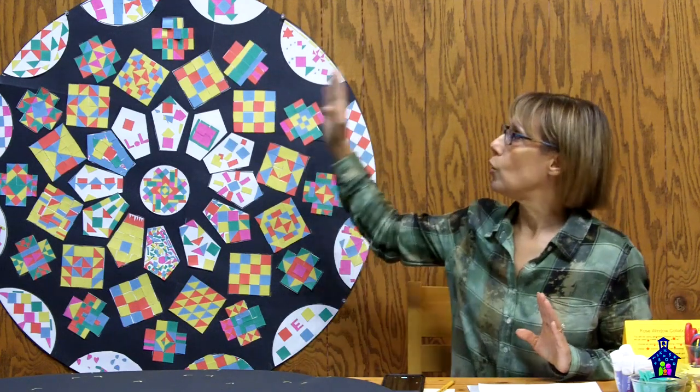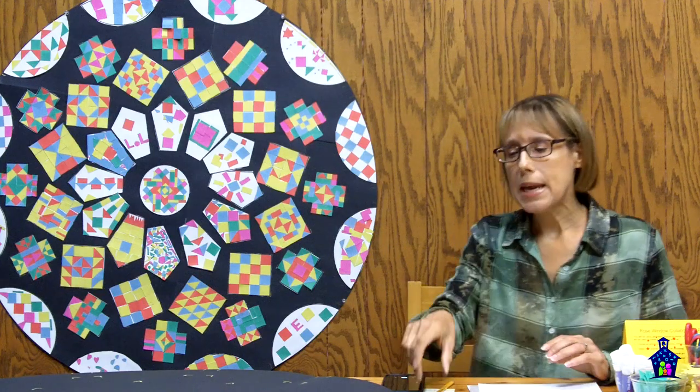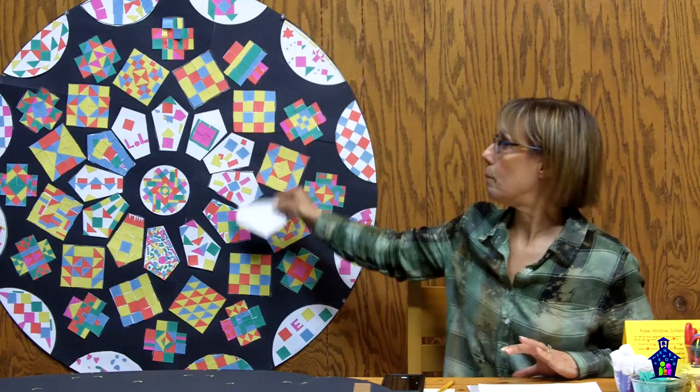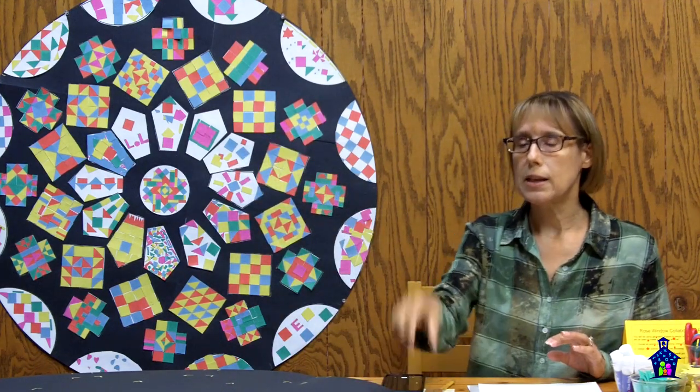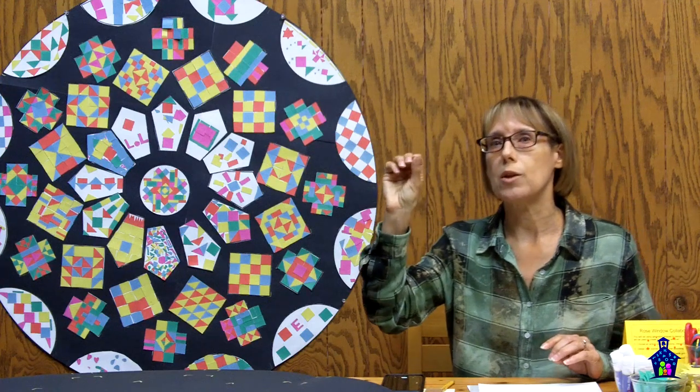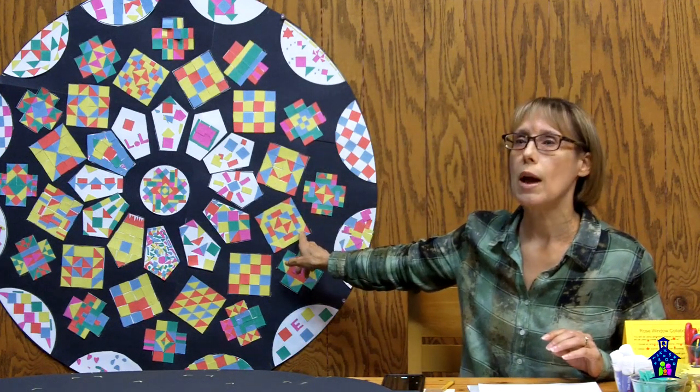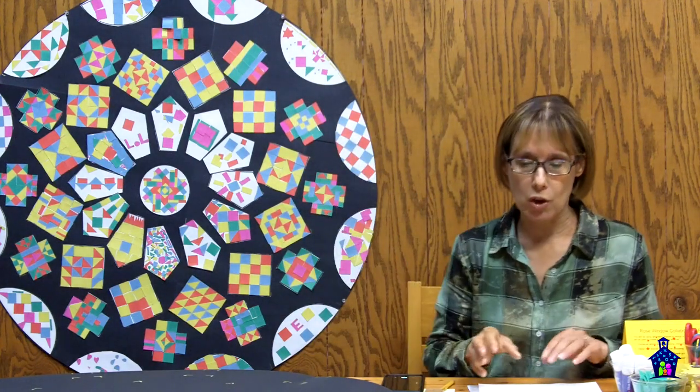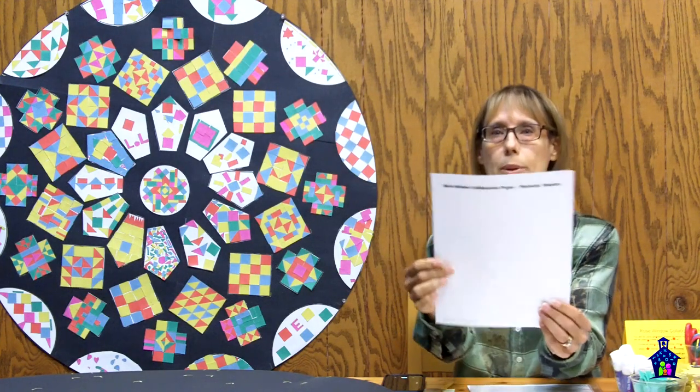So it will be really easy for you to create that. I used poster board to create mine, but you can also use bulletin board paper as well. So once you've got your black circle created, to make it easy for the station facilitators to place the different panes on the window, I decided to create a template that you can use to create little tick marks on your black circle that will help them guide them to where all of the different panes should go. And in the lesson plan, it's called the placement template.